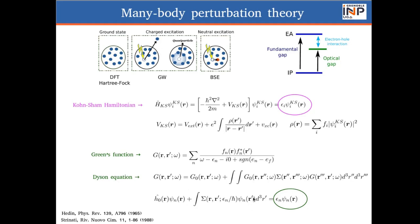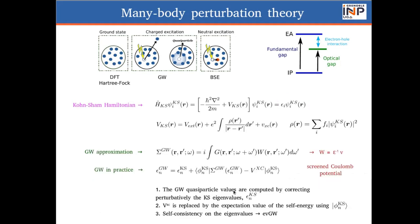Within Hedin's set of equations, which is a closed set of equations, we work within the GW approximation with the lowest term in the expression of the self-energy as a function of W, which is the screened Coulomb potential. And practically, we work in a perturbative way, which means that we keep our Kohn-Sham wave function frozen, and we perturbatively correct the Kohn-Sham eigenvalue with the expectation value of the self-energy computed using the Kohn-Sham wave function.